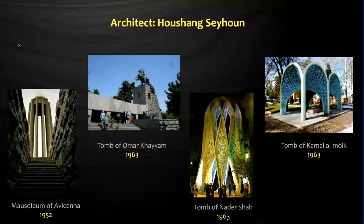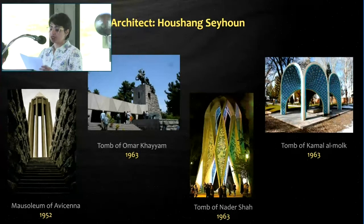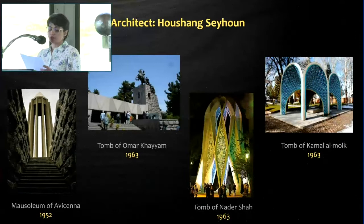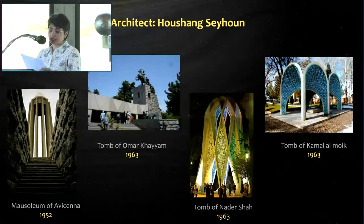Despite European architects trying to build modern buildings in Iran, some Iranian architects, such as Hushang Sehun, attempted to revive traditional Iranian architecture. Sehun blended principles of modern architecture with forms and materials taken from traditional Persian architecture. He rejected the formal duplication and imitation of Western architecture, and admired learning from the principles of traditional Iranian architecture while drawing from the advantages offered by the technical achievements of the modern world.